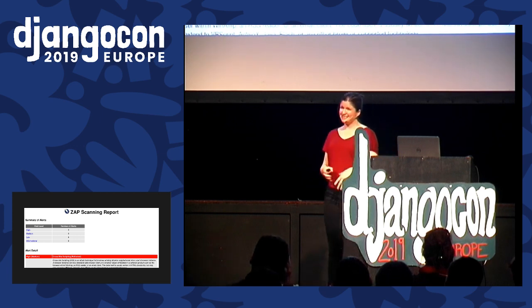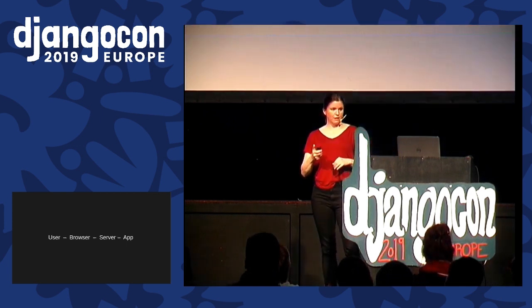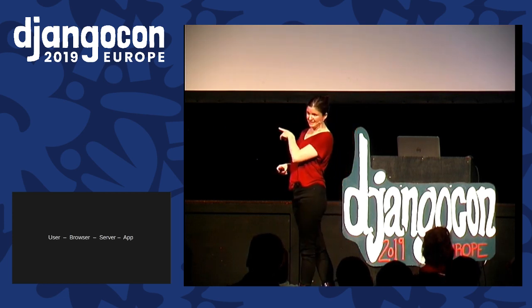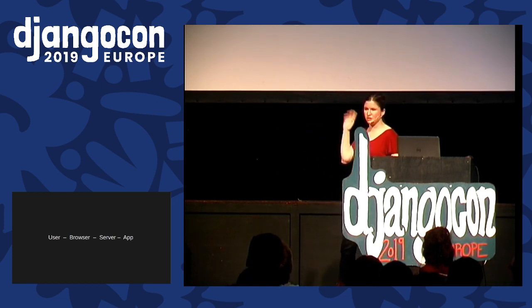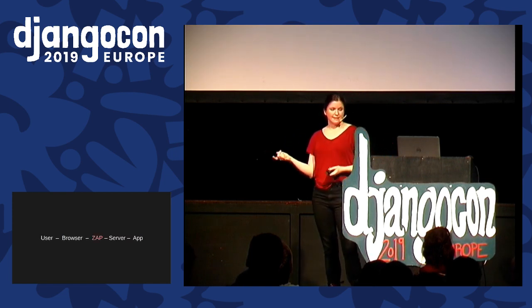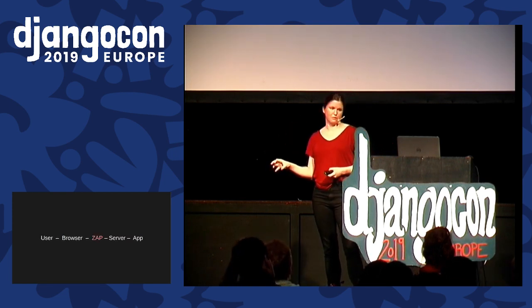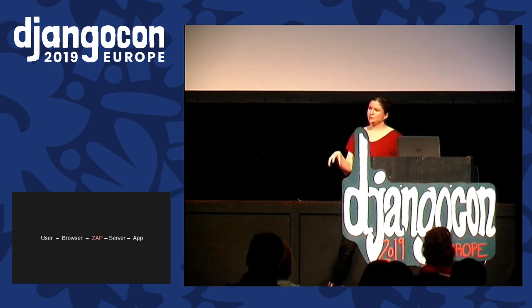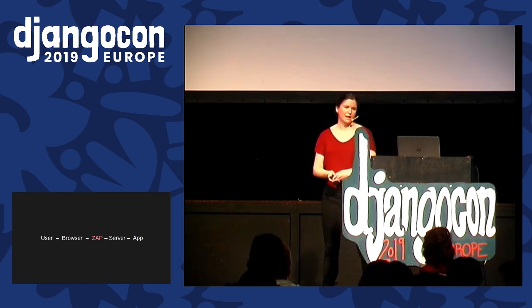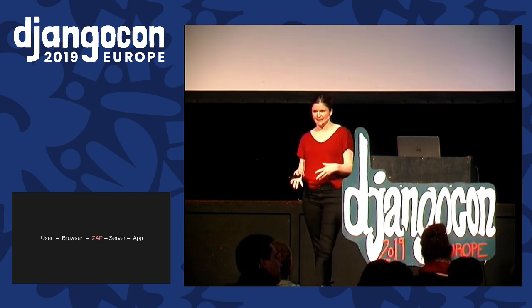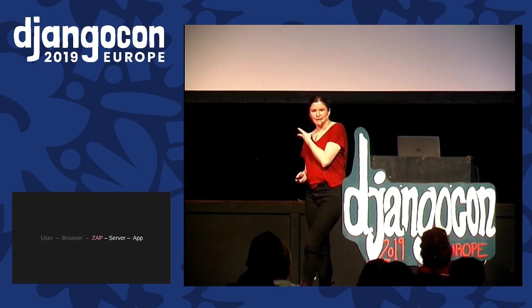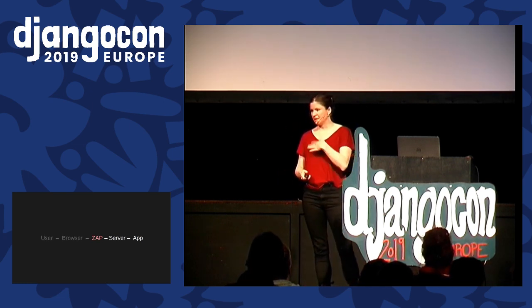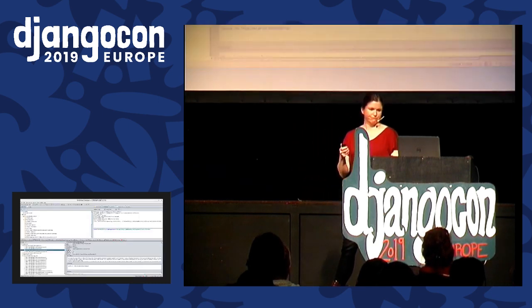So how does it work? It's an intercepting proxy. When someone's using the internet, there's a user using a browser, the browser's communicating with the server, the server's serving the app's content. ZAP goes in between as a proxy, between the browser and the server. It can see and analyze all of the traffic, and when it's doing that it's looking for vulnerabilities - that's called a passive scan. But it can also run active scans or attacks. When running active scans, it's impersonating a user and cutting the browser out of the picture.